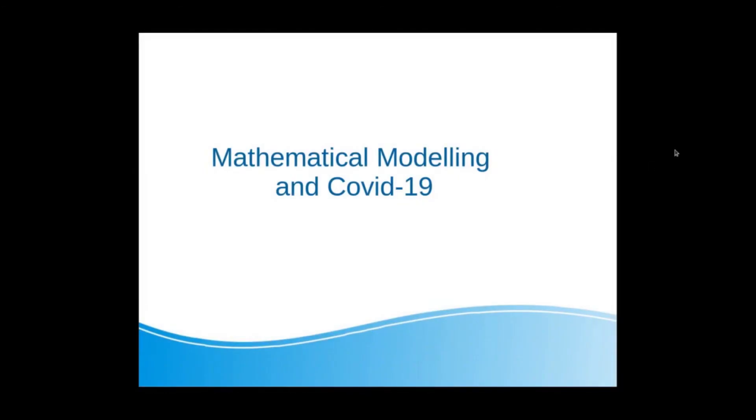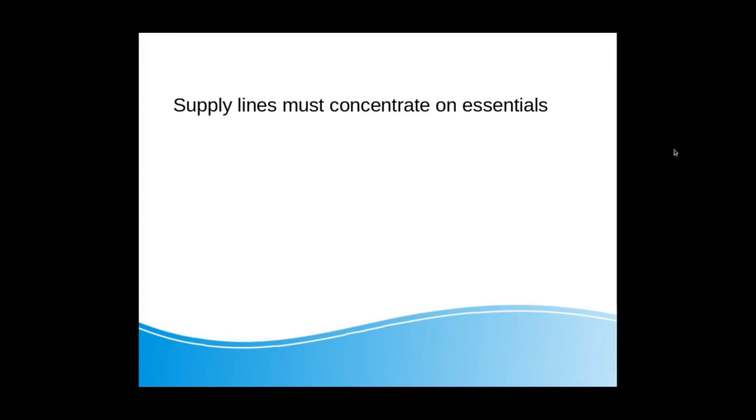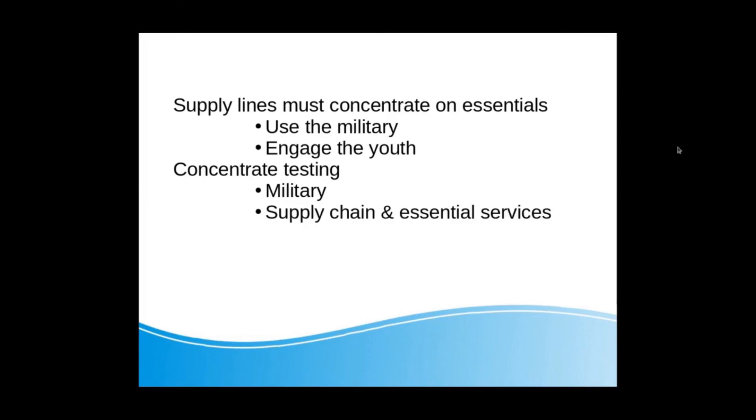Taking a look at what we have found out, some fairly obvious points seem to jump out at us. Supply lines have to concentrate on essentials. You can use the military and you can engage the youth. Concentrate your testing on the military, supply chain and essential services, your food producers and your health workers.